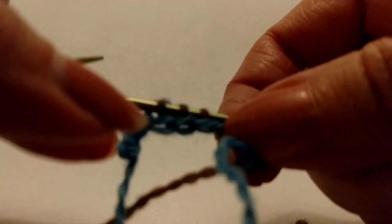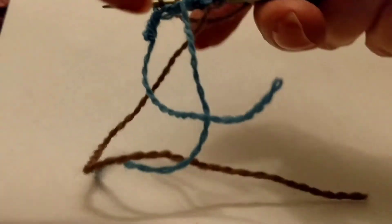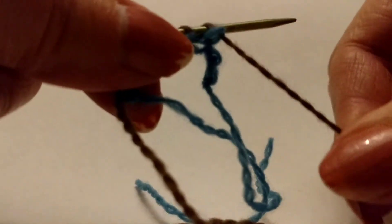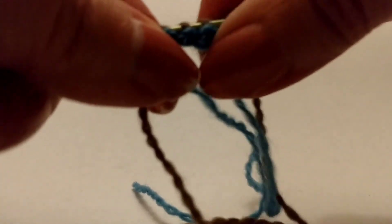And that will be your cast on. Then you can turn the work so that your working yarn is on the right, and then you can start knitting like you normally would.